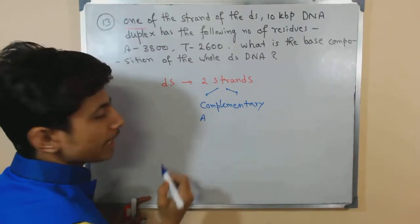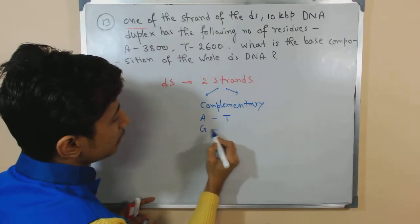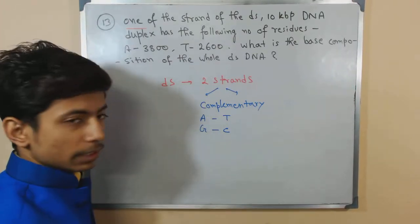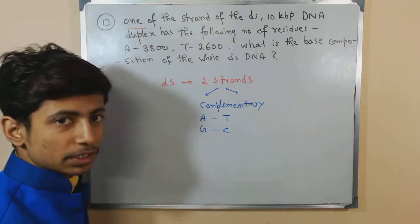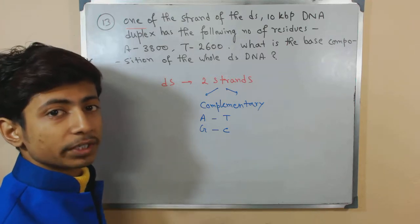That means if one strand has A, the other strand will have T. If one strand has C, the other strand will have G. This happens in all DNA because this type of base pairing is called Watson-Crick base pairing.